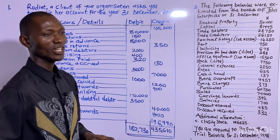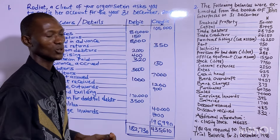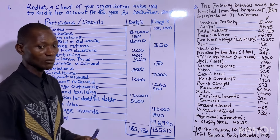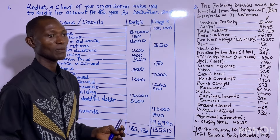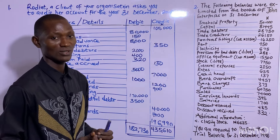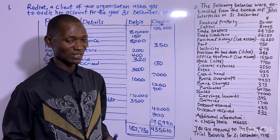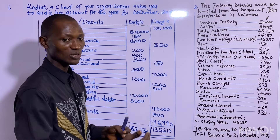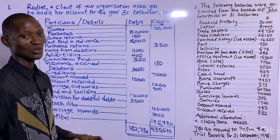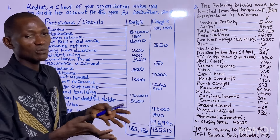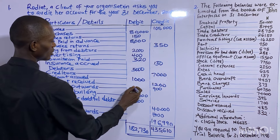Carriage outwards are expenses you incur in delivering goods from your warehouse to the customer's warehouse. These costs are attributable to sales and are expenses — all expenses are debited. It was credited here, so it should be debited. Land and building is a non-current asset and all assets are debited — this is intact.